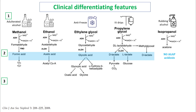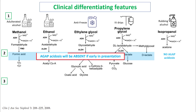As you can see, the first four alcohols have acid intermediates, so these four are associated with anion gap metabolic acidosis. However, isopropanol is metabolized completely to acetone, so there is no anion gap present. Understand that anion gap acidosis will be absent if the patient presents very early.